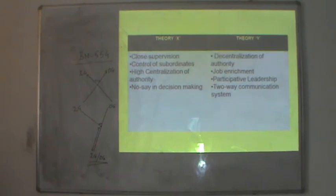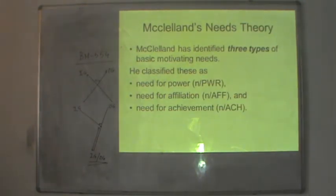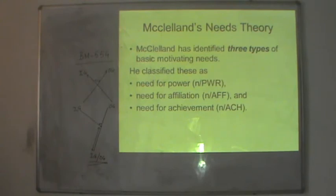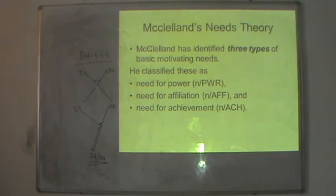The last content theory, or need-based theory of motivation, is McClelland's Needs Theory. This theory has identified three types of basic motivating needs: need for power, need for affiliation and need for achievement. An employee will be motivated in an organization if he has either of these needs, and in order to fulfill these needs he will be motivated to perform better. As per McClelland, need for achievement is found at a higher level in organizational members and acts as the general motivating need.